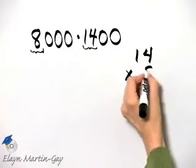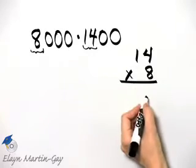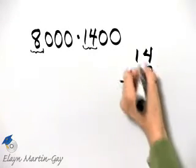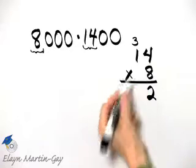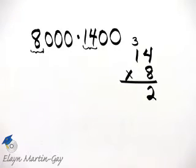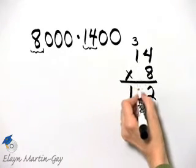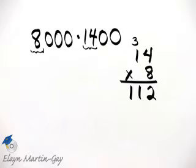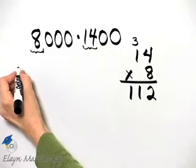14 times 8: 8 times 4 is 32, carry the 3. 8 times 1 is 8, plus 3 is 11. So the product of 14 and 8 is 112.